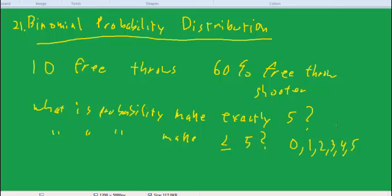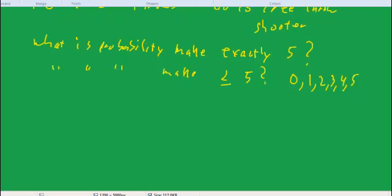Okay, so those two things. Now for the first one, for the exactly, let's call this number 5, let's call that K. So what we're asking in that case is, what's the probability that X equals K?